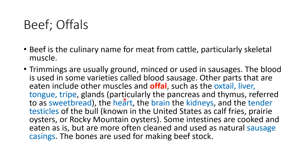You also have the heart, brain, kidneys, and testicles. The intestines are often used as sausage casings. The bones of the animals are used for making beef stock. So in essence, every single part of it is used.